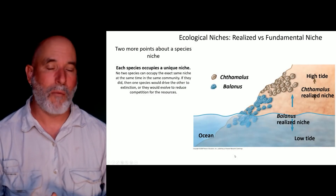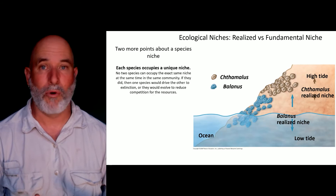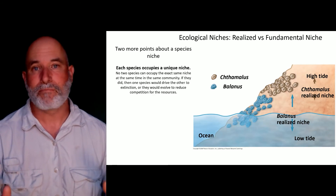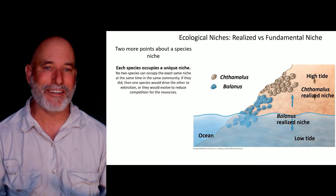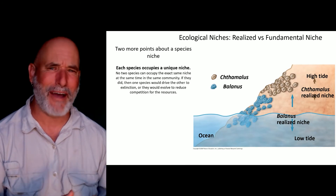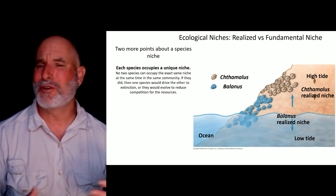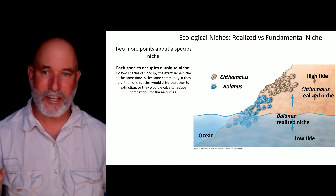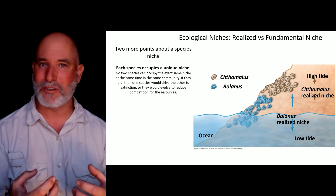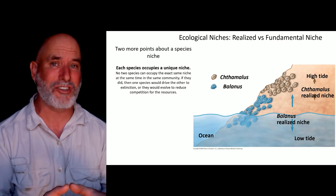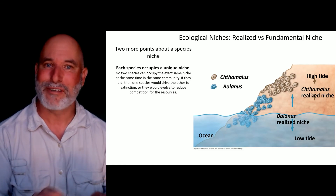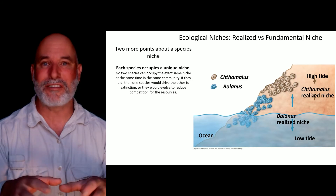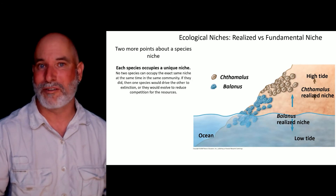There are a couple of important points about a species' niche. First, each species occupies a unique niche — no two species can occupy exactly the same niche at the same time, because they would compete with each other. That biotic interaction drives evolution and character displacement, so the two species become more and more different to reduce competition.